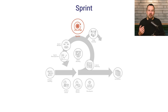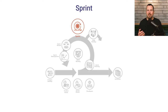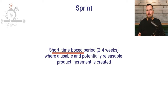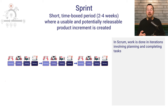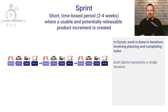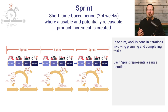The Sprint is the main event in Scrum and it contains the other four events. Work in Scrum is done in Sprints, which are short, time-boxed periods, usually two to four weeks long, where a usable and potentially releasable product increment is created. Each Sprint represents one of the iterations we discussed earlier.